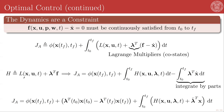We define a Hamiltonian as the Lagrangian — this L function encoding our path cost — plus lambda transpose times the dynamics. This allows us to rewrite our augmented cost function as the final state costs, plus the integral from t0 to tf of the Hamiltonian in time, minus the integral from t0 to tf of lambda transpose times the time derivative of the state x. We can integrate this second integral by parts.